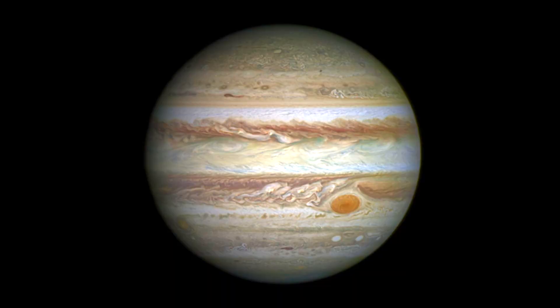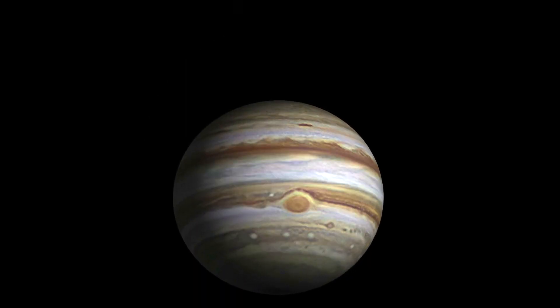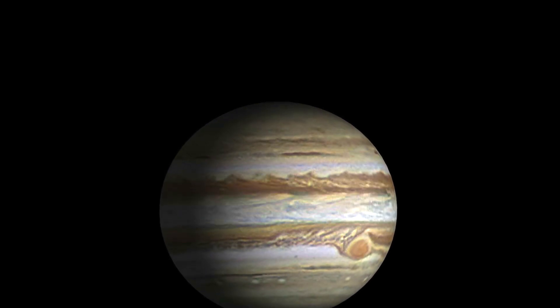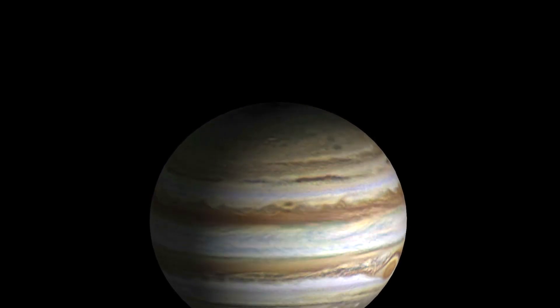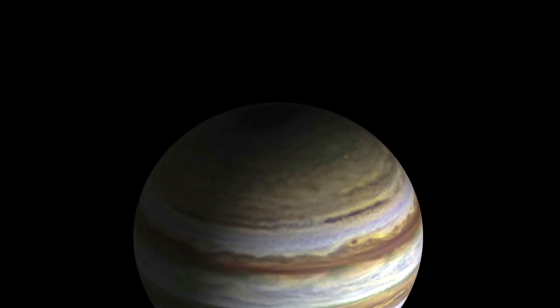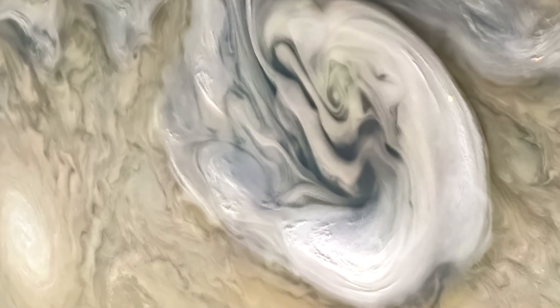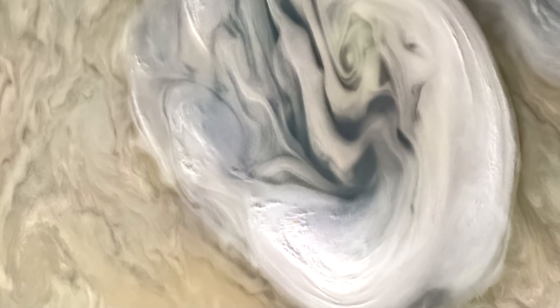Next is Jupiter. As a gas giant, Jupiter doesn't even have a true surface. You're not even making an effort, Jupiter. You could at least try to be normal and have a rocky surface. NASA says the planet is mostly swirling gases and liquids. While a spacecraft would have nowhere to land on Jupiter, it wouldn't be able to fly through unscathed either. The extreme pressures and temperatures deep inside the planet would crush, melt and vaporize spacecraft trying to fly through.